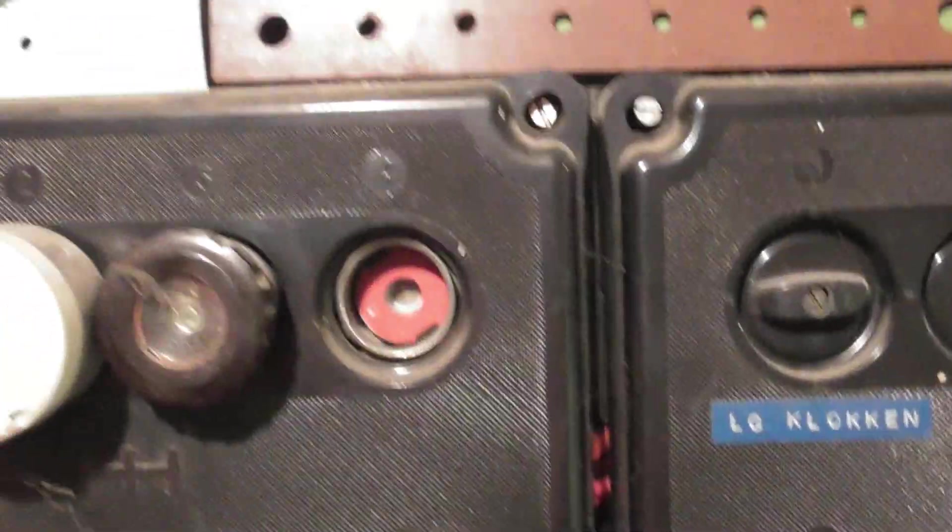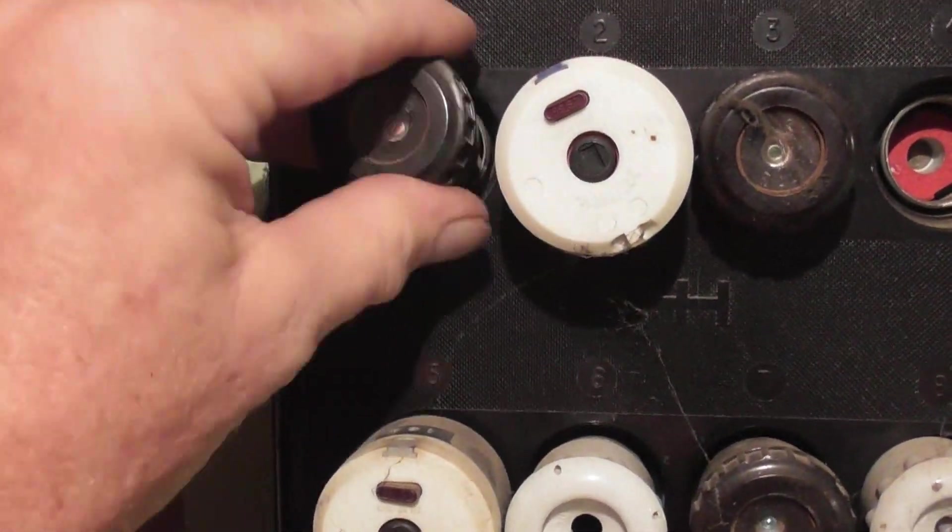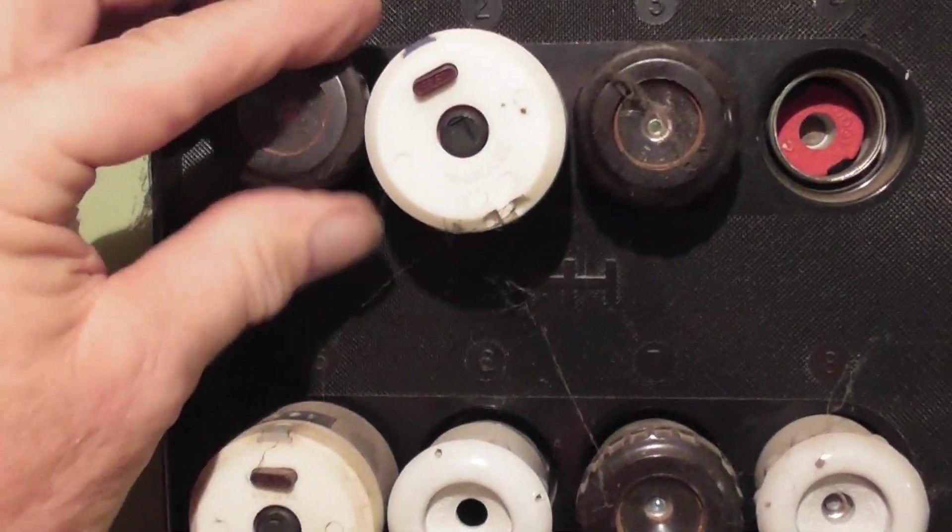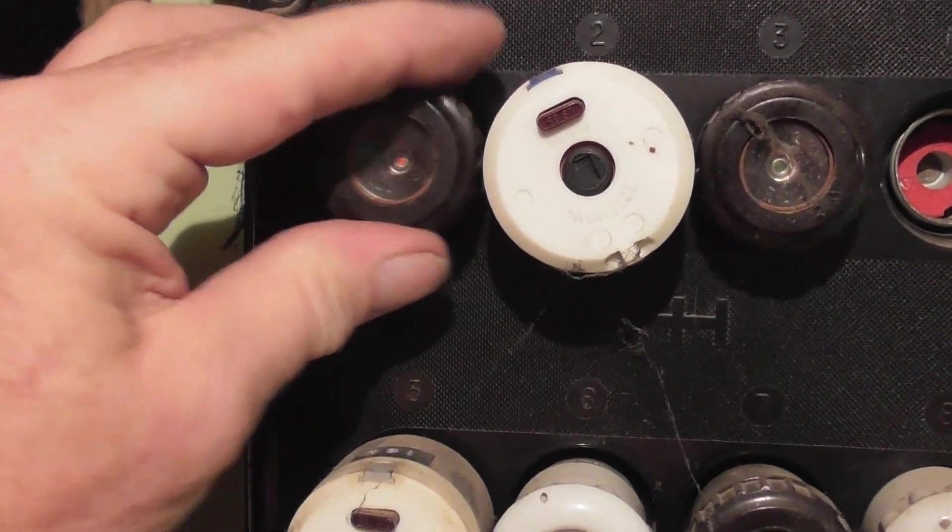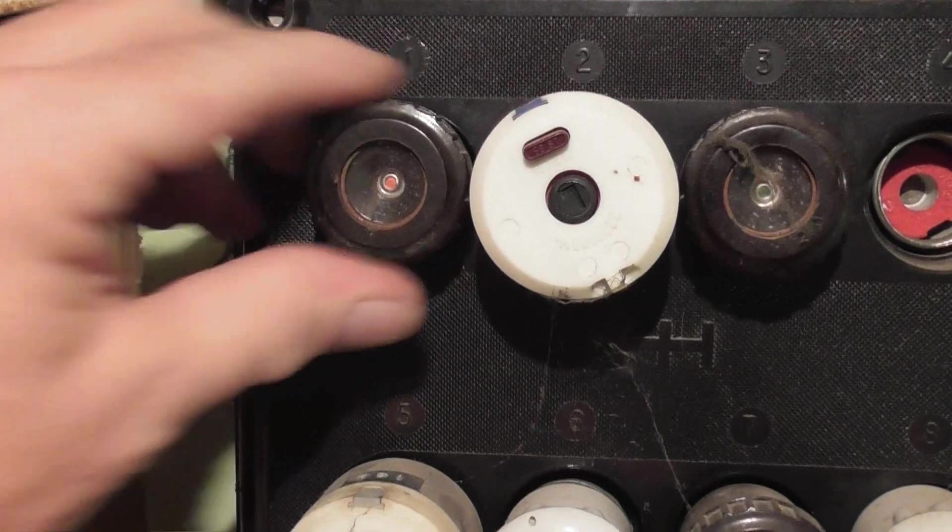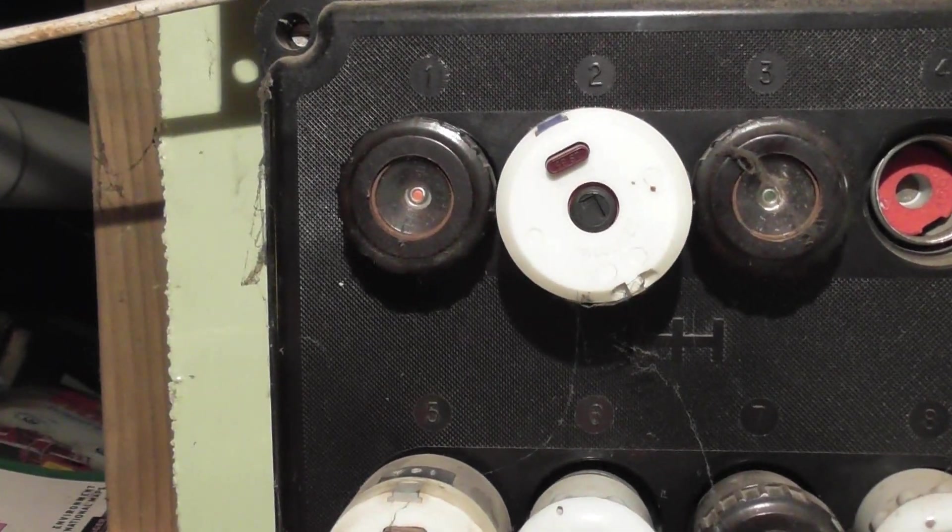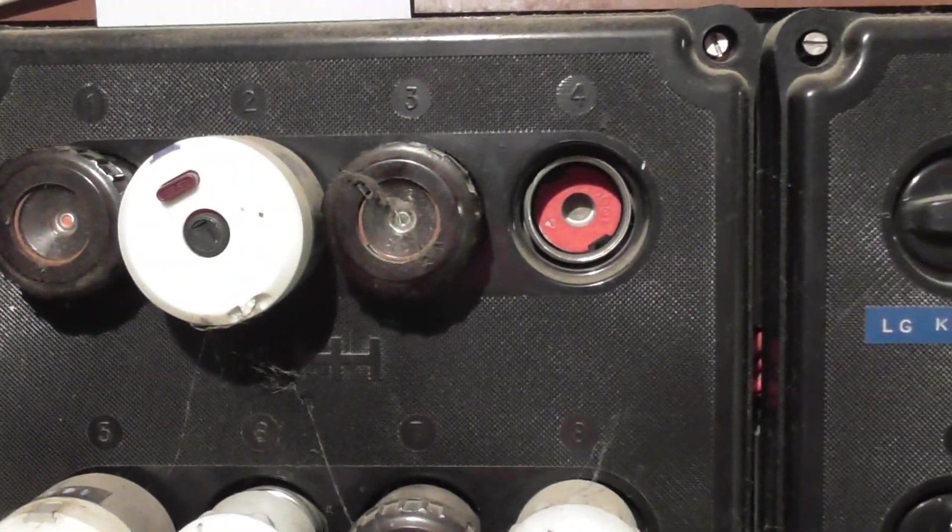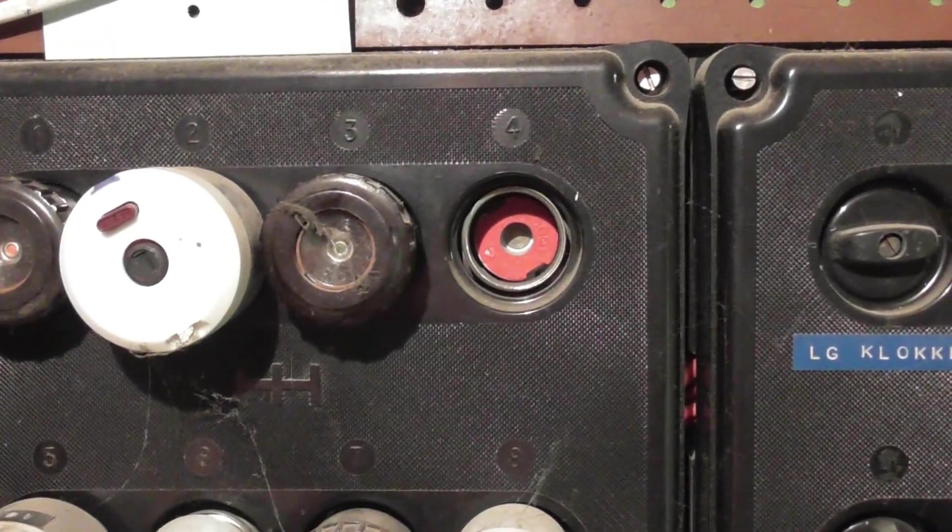So I can fit a 10 ampere fuse in a 16. The whole idea is with the pass-sover, we call them, or inserts, you can put a lower rated fuse in the same carrier, but not a higher rated. So a 16 won't fit in here.